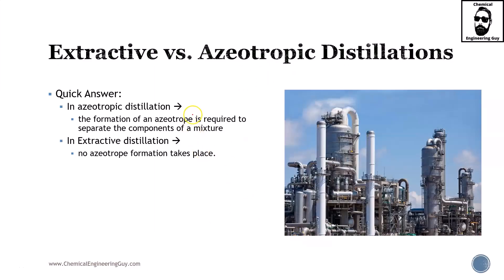Now that we know about extractive and azeotropic distillations, let us make a clear difference between both of them. Both are distillations, meaning that the main idea is that they exploit the difference in volatility between the components that we want to separate.